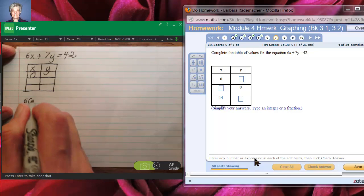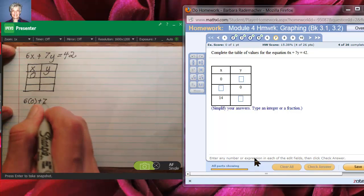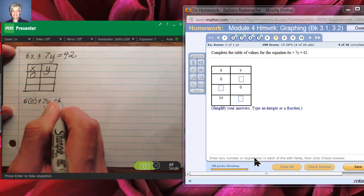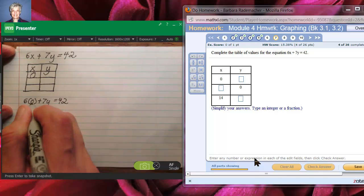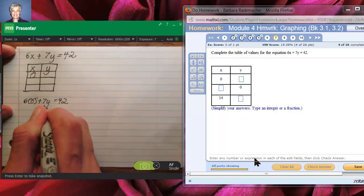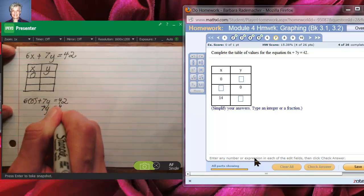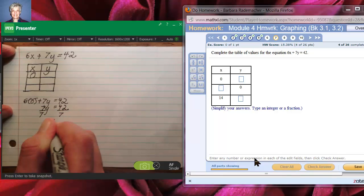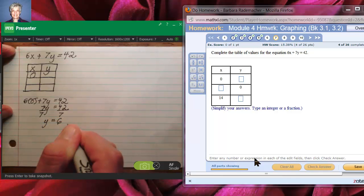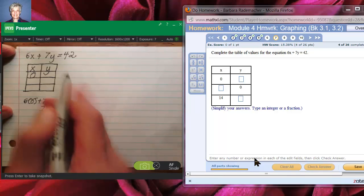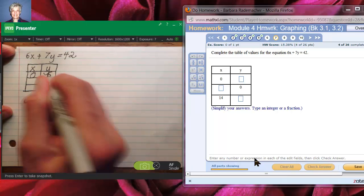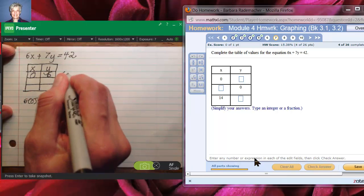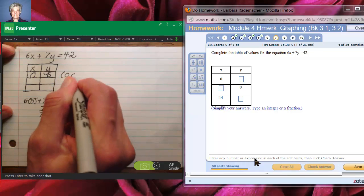So 6 times 0 plus 7 times y equals 42. 6 times 0 is 0 so we're going to say 7y equals 42 then divide both sides by 7 to get the y by itself and we'll have y equals 6. So now we know that if x is 0, y is 6 and what that does is it gives us the point (0, 6).